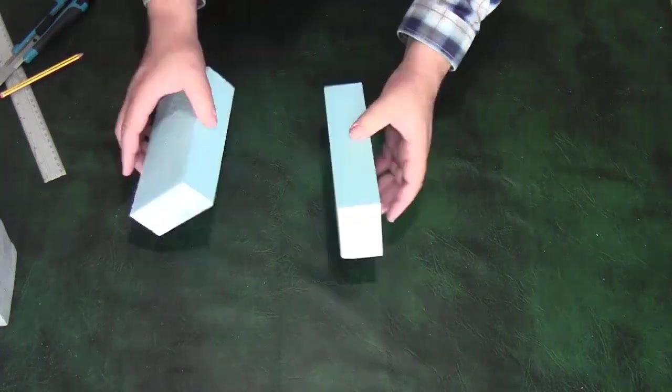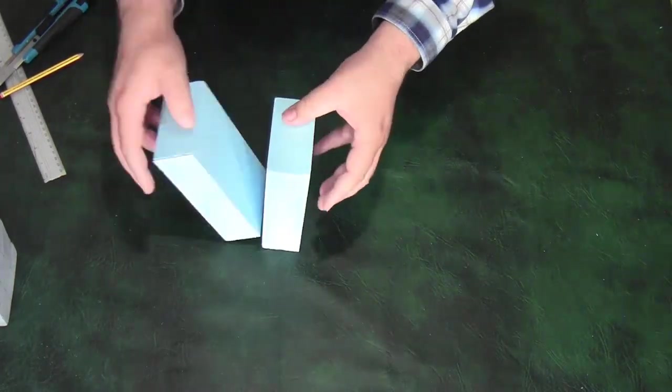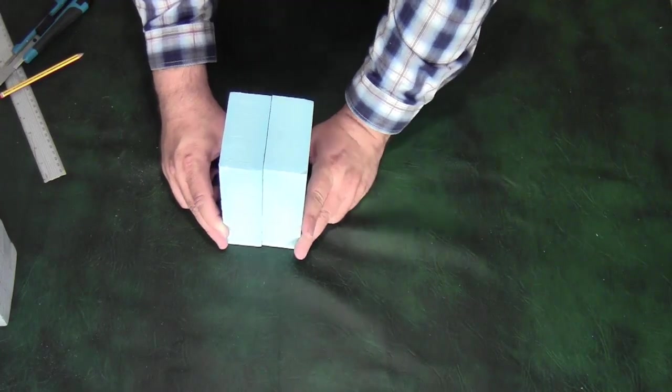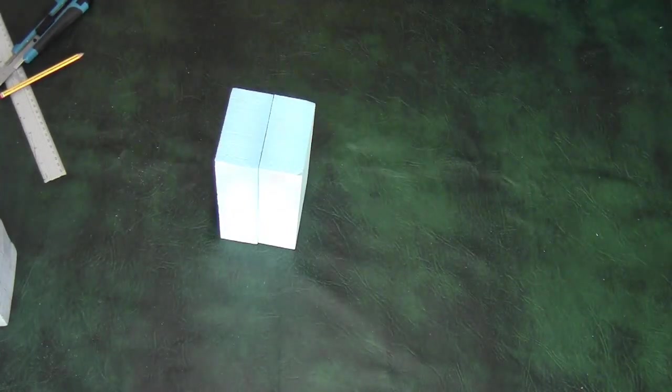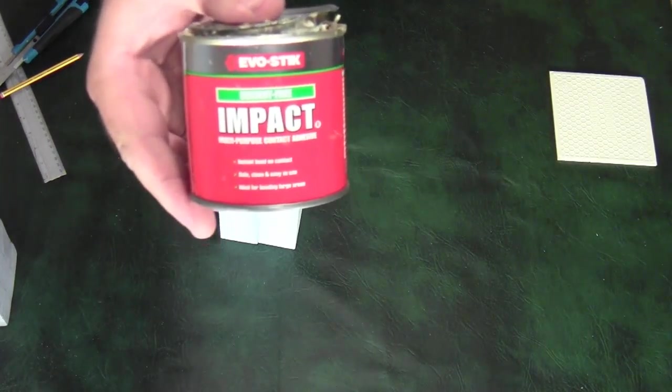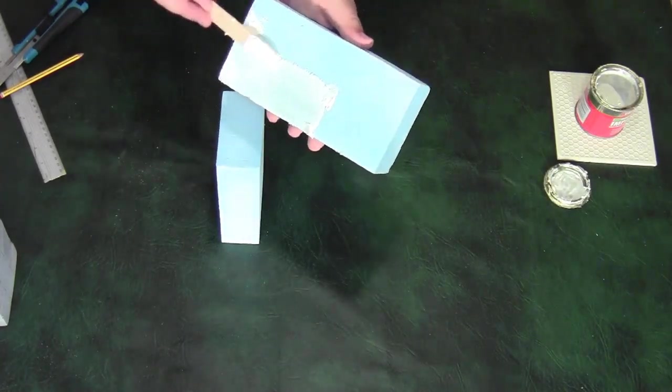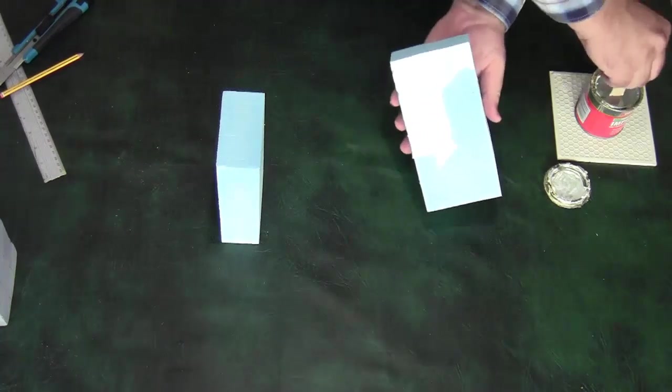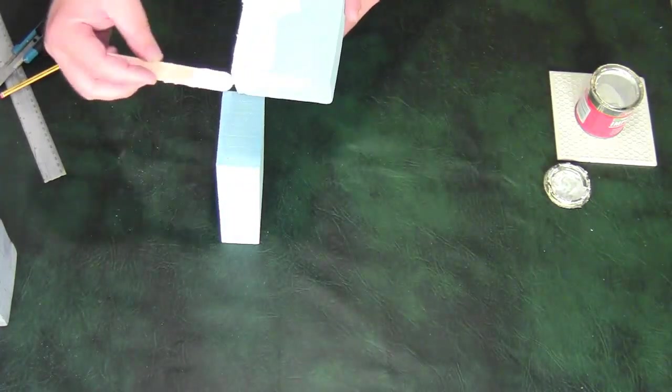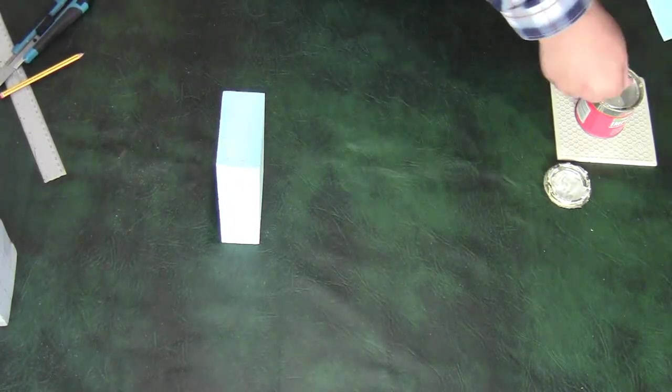In the next stage I'm going to fix the two pieces of blue foam together. In order to do this I twist them around to make sure I get the best fit. I then use a non-solvent or solvent-free or water-based contact adhesive. The solvent-based contact adhesive will have an adverse effect on the polystyrene.